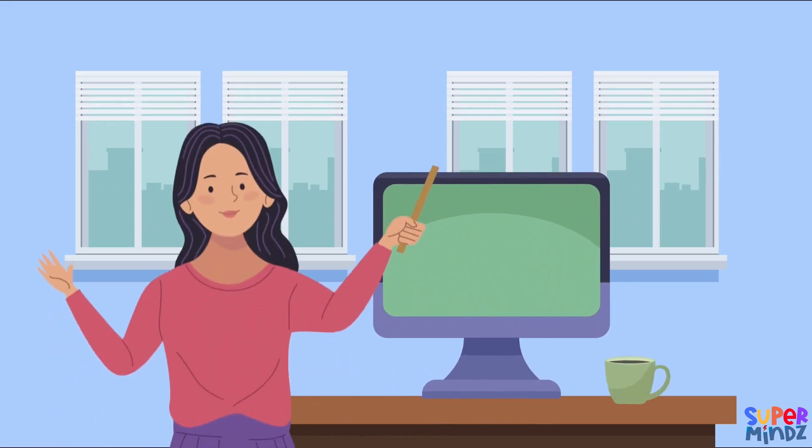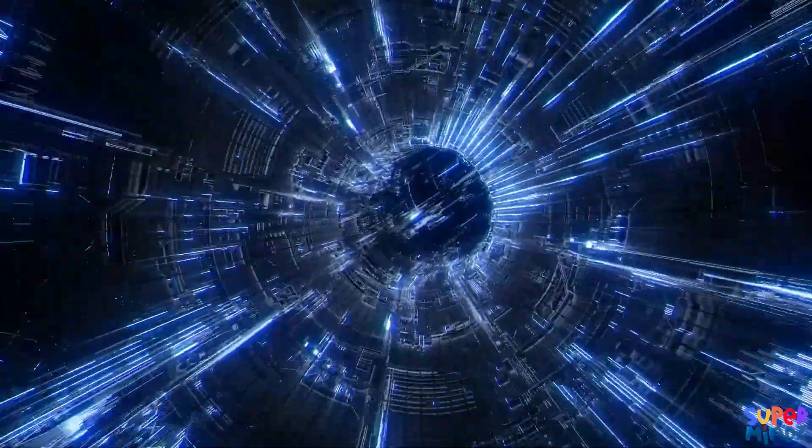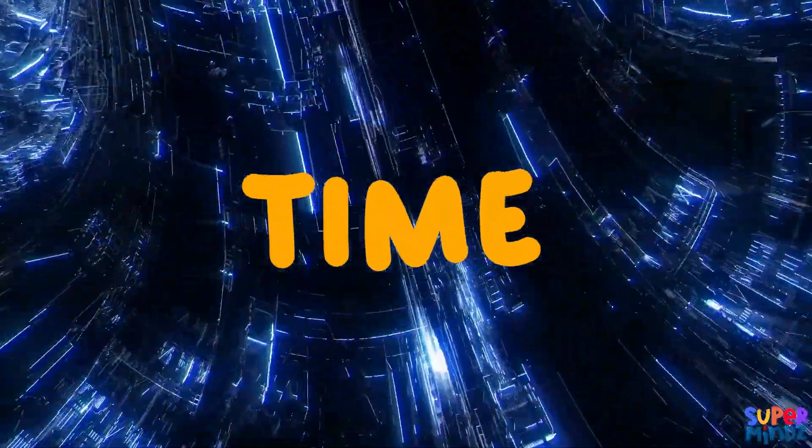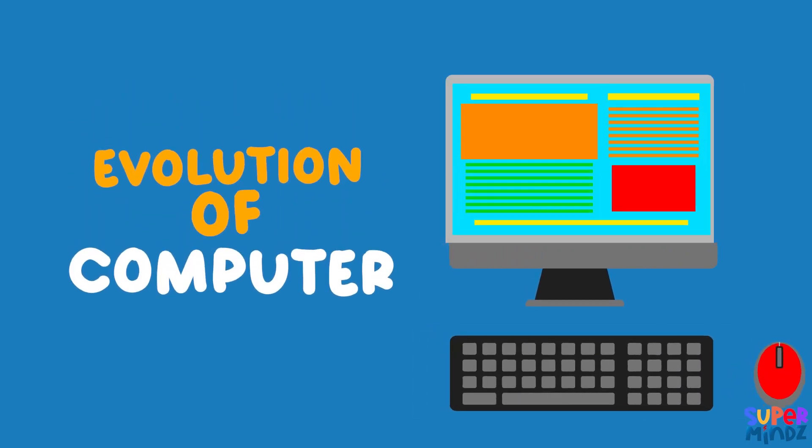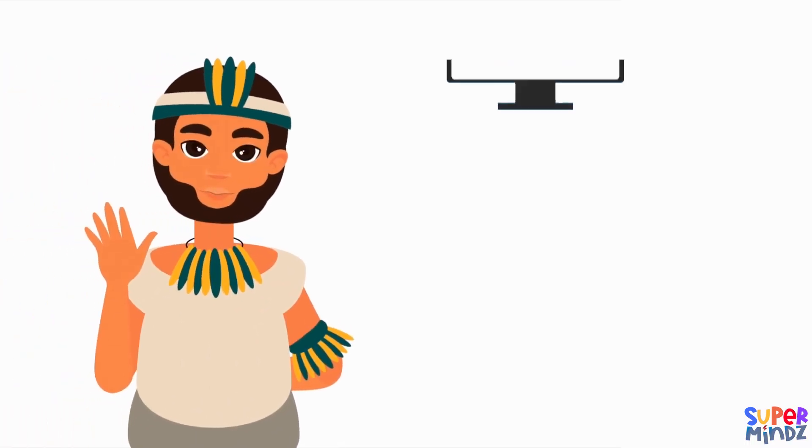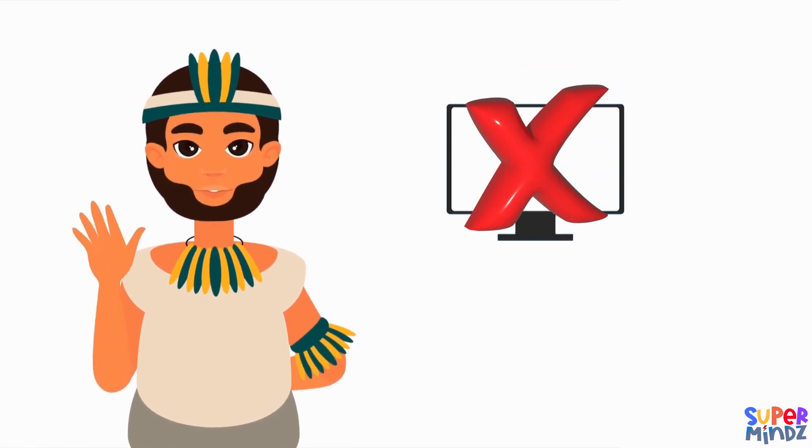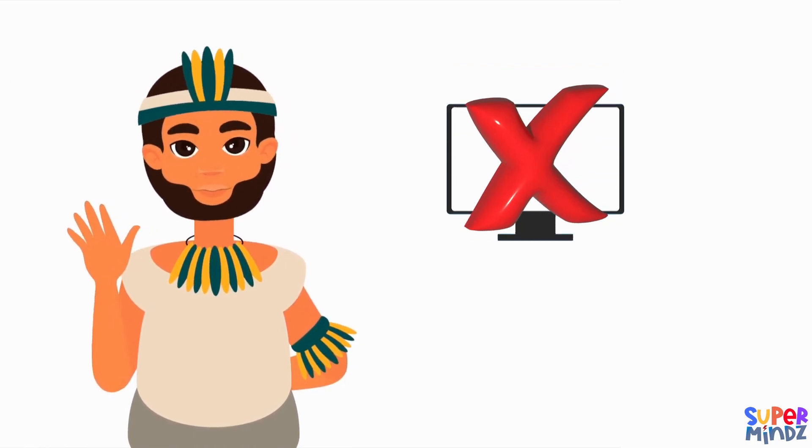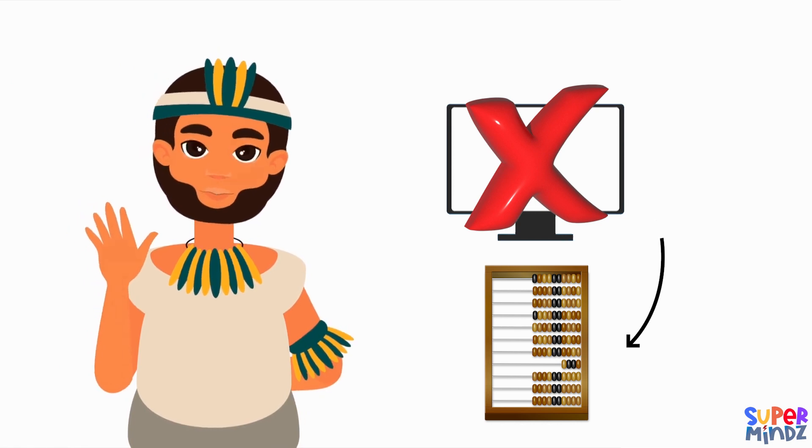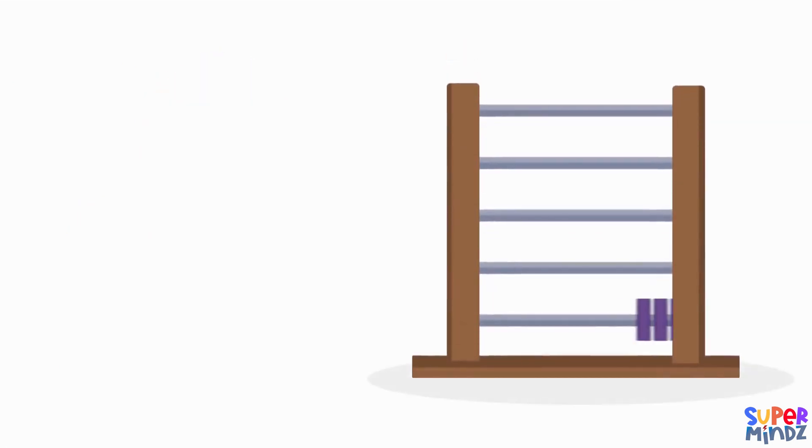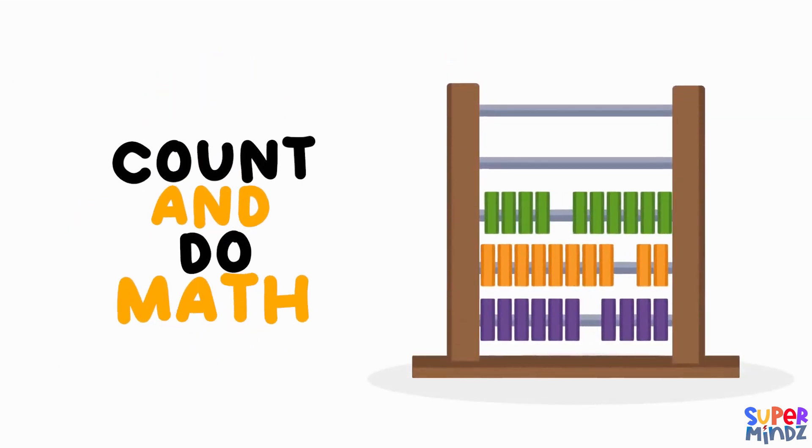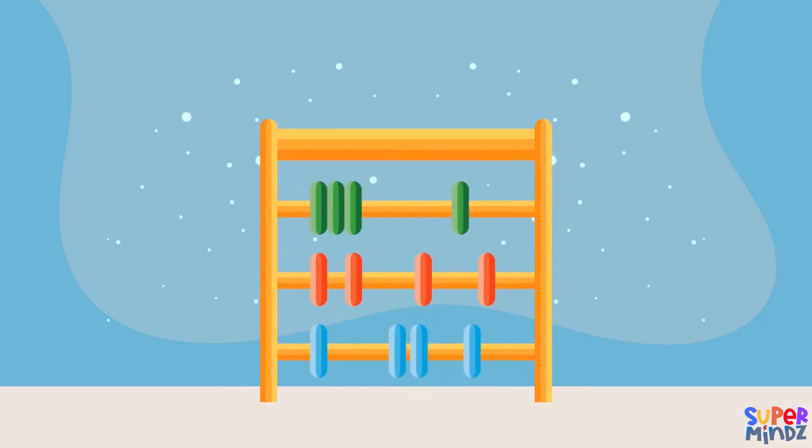Hello kids, today we're going on a journey through time to learn about the evolution of computers. Thousands of years ago, people didn't have computers, but they had something similar called an abacus. It was a tool used to help them count and do math. An abacus has beads that you can move around to add or subtract numbers.